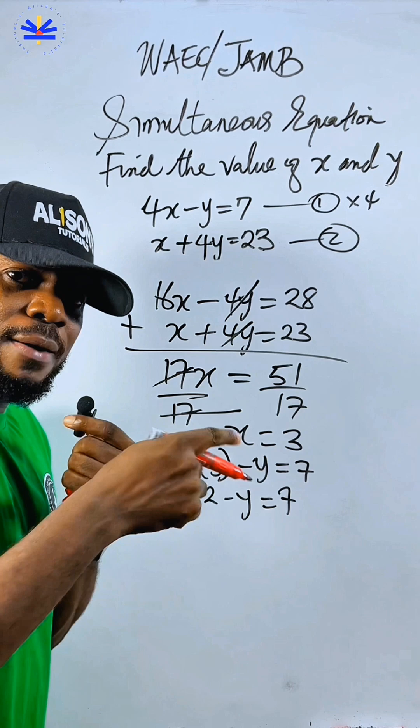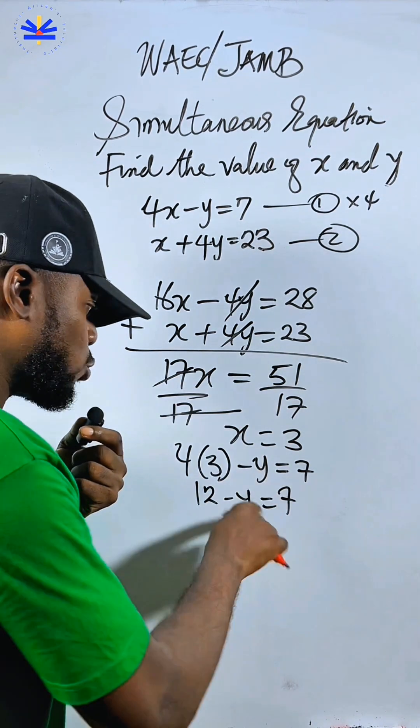This one now, 12 will give you minus y equal to 7. So sometimes, if not jam objective, you don't need to waste time. Just switch something. Switch.